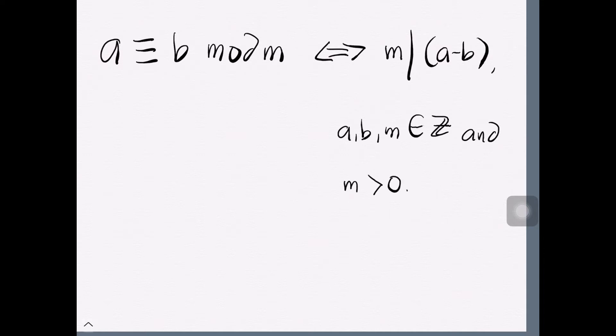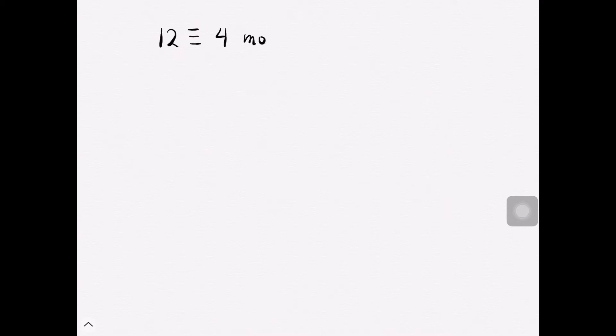To picture this out, let's have these examples. Say, 12 is congruent to 4 modulo 8, and this is true since 8 divides 12 minus 4. Similarly, 7 is congruent to negative 5 modulo 6, considering that 6 divides the difference of 7 and negative 5.